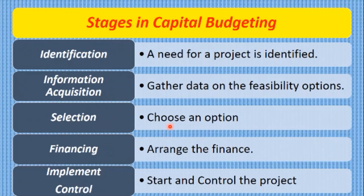Selection: for more than one option, you're going to have to choose an option. Then you have to arrange financing. Then you implement and control — you start and you control the project. So five stages in total, though you may see it divided up into more stages in some textbooks.